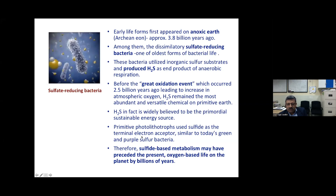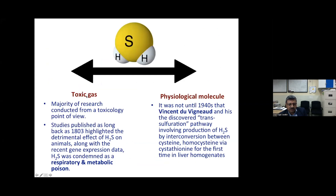The key message is that sulfide-based metabolism was the most primitive form — life on Earth evolved from H₂S-based to oxygen-based metabolism. Most research conducted for centuries focused purely on H₂S toxicology. Studies published as far back as 1833 highlighted detrimental effects on animals. Recent data also shows H₂S interferes with gene expression, impairs respiratory and metabolic functions — making it what was considered a cellular poison.